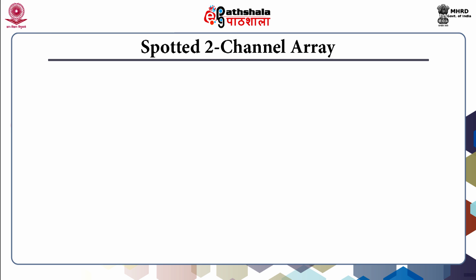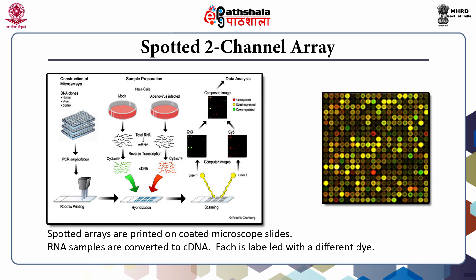A spotted two-channel array has been utilized to understand the difference between standard HeLa cells and adenovirus-infected cells, from which total RNA has been extracted. Reverse transcription generates cDNA labeled with two different dyes, CY3 and CY5. CY3 is the green-colored dye whereas CY5 is the red-colored dye. After scanning, RNA samples are read using the laser beam twice — first CY3 then CY5. These images generated through the computer are then overlaid onto each other to generate the final data.